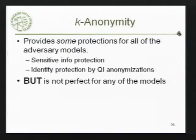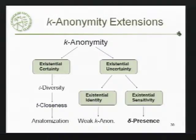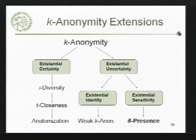K-anonymity provides some protection in all of these views, but not perfect. Some of the extensions — what we're going to look at today is delta-presence, which handles whether an item is in the data set, but looks at this in a very new way. It looks at what is the risk associated with learning that someone's in the data set and how sure you are that they are in the data set, and enables us to come up with new ways for anonymization.